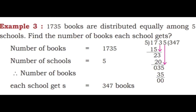Let's see example 3: 1,735 books are distributed equally among 5 schools. Find the number of books each school gets. Number of books is equal to 1,735; number of schools is equal to 5. So we divide 1,735 by 5. 5 threes are 15; 17 minus 15 is 2. Bring down 3, making 23. 5 fours are 20; 23 minus 20 is 3. Bring down 5, making 35. 5 sevens are 35; 35 minus 35 is 0. So each school gets 347 books.